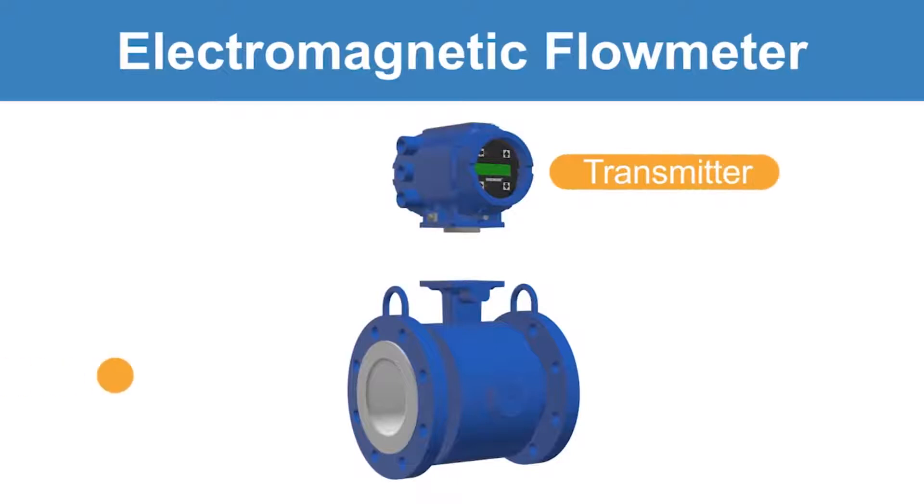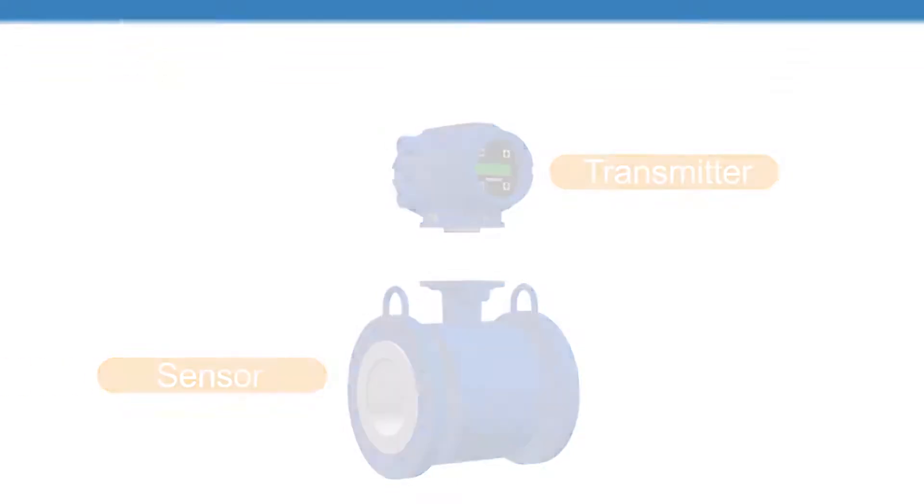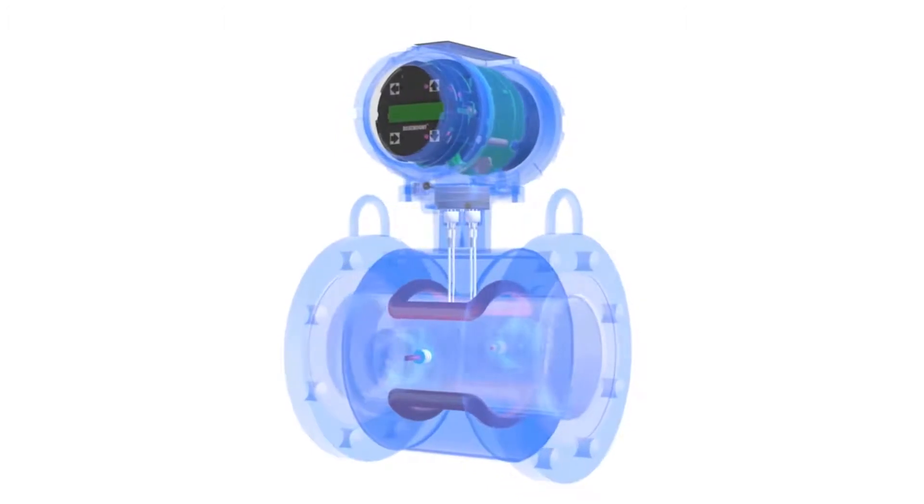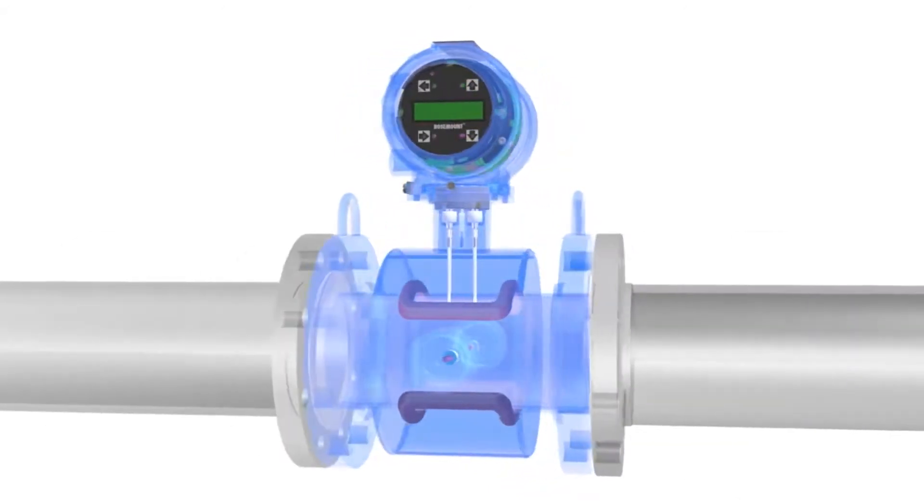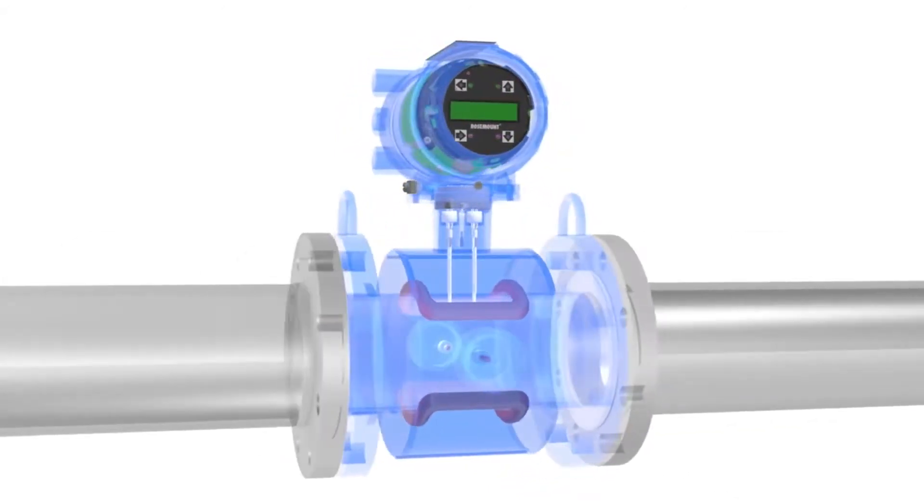Magmeters are comprised of a transmitter and sensor that together measure the flow. The magmeter sensor is placed in line and measures an induced voltage generated by the fluid as it flows through the pipe.